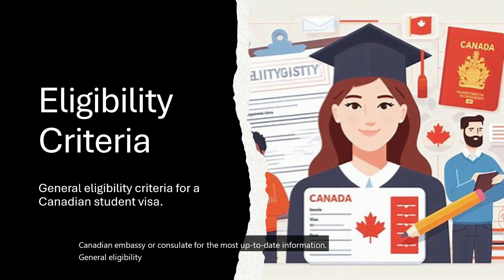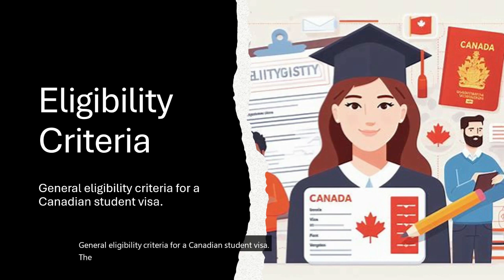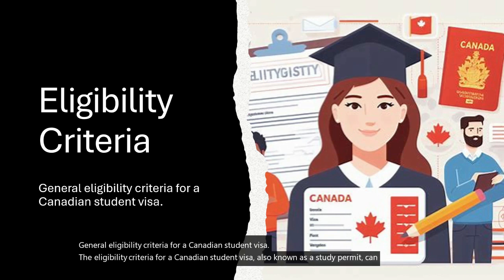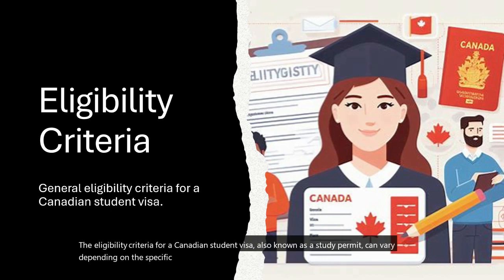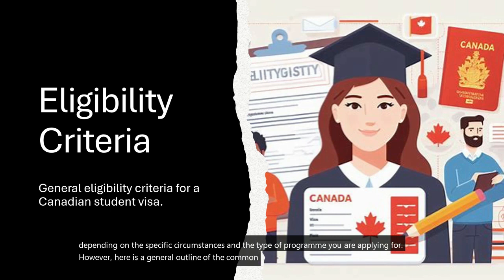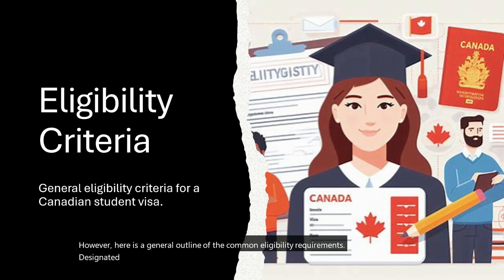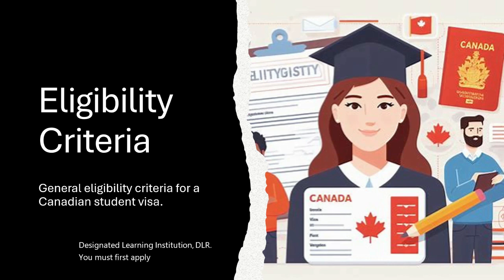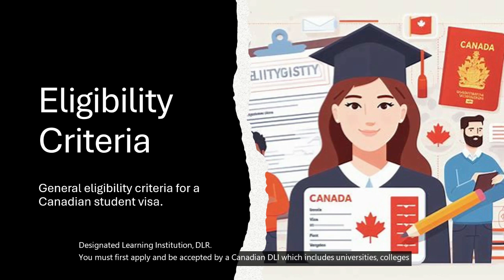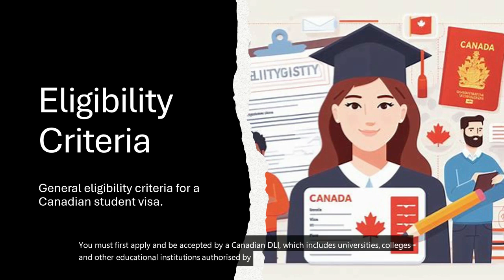The General Eligibility Criteria for a Canadian Student Visa can vary depending on your circumstances and the type of program you are applying for. First, acceptance by a Designated Learning Institution (DLI): you must first apply and be accepted by a Canadian DLI, which includes universities, colleges, and other educational institutions authorized by the Canadian government.